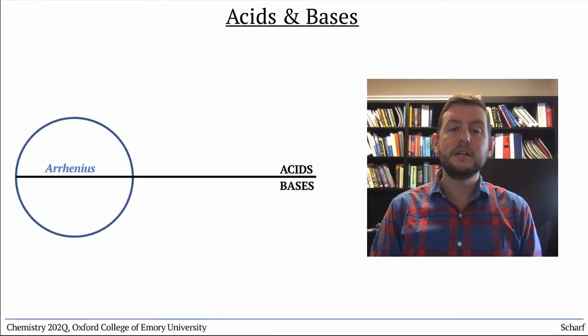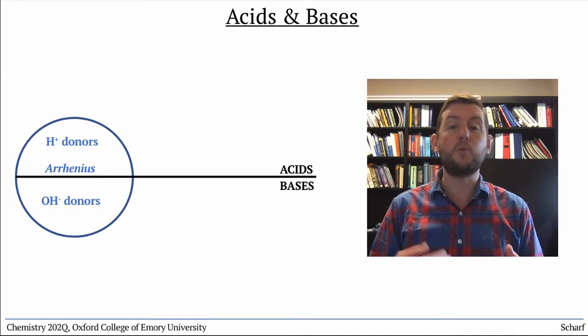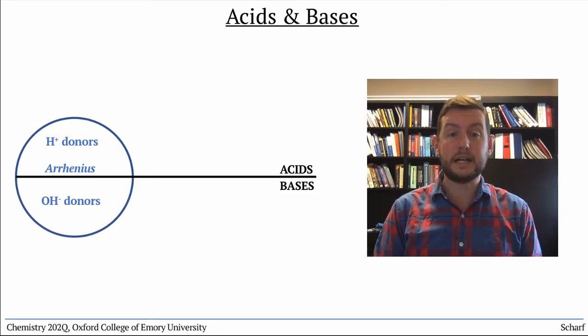Arrhenius acids donate a proton, H+, to whatever they react with, while Arrhenius bases provide a source of hydroxide ions.